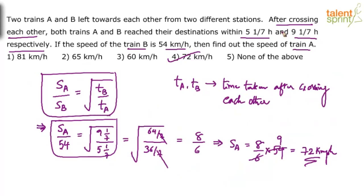In fact, try and write 8/6 directly. You know that 5 1/7 will give you 36/7. This will give you 64/7. So 7 and 7 will get cancelled. Try and cut down the number of steps and get the answers as quickly as possible.